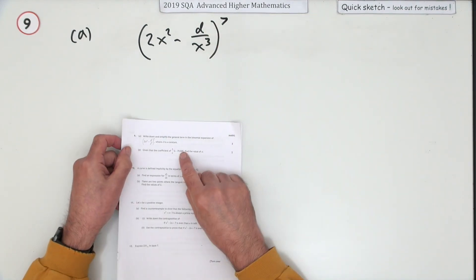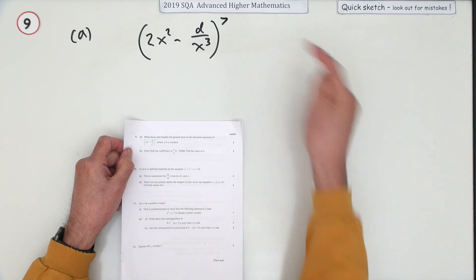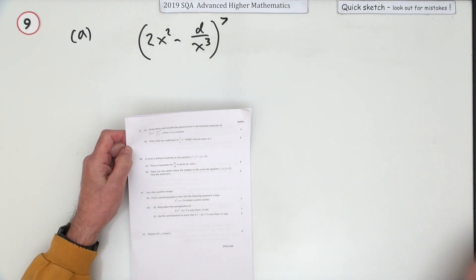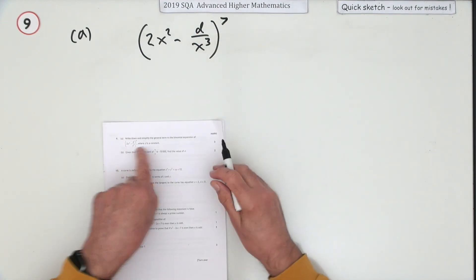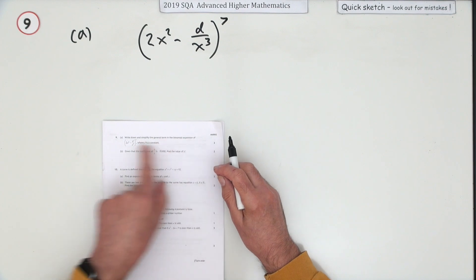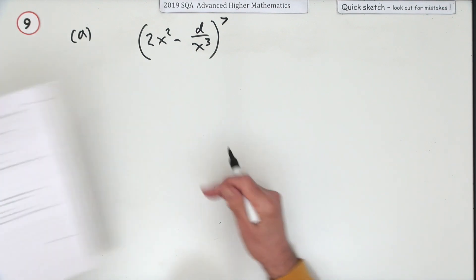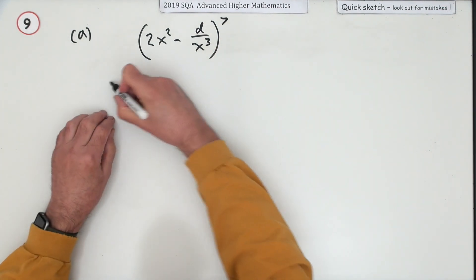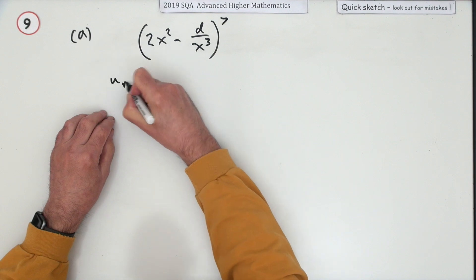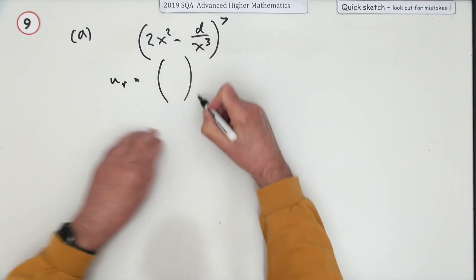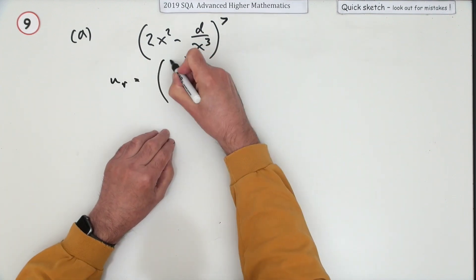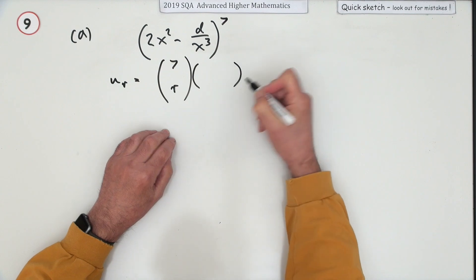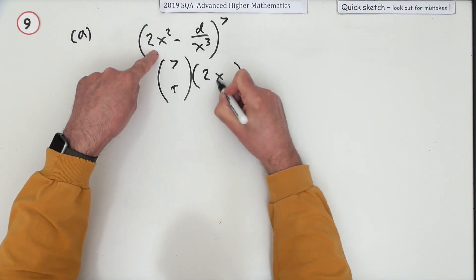There's an unknown — they're actually giving you the answer this time but asking you to find a constant within it. It doesn't make it any harder, but they're specifically saying: write down the general term first of all, for three marks. The general term would be the binomial coefficient — it's power seven, so it's C(7, r). It's a binomial, so there are two parts.